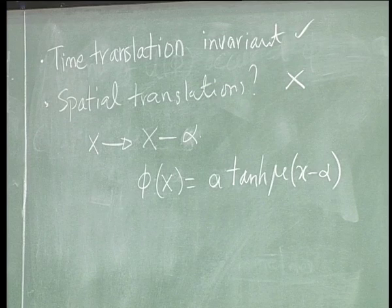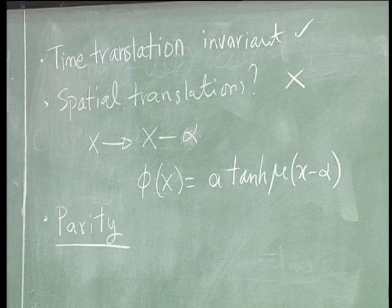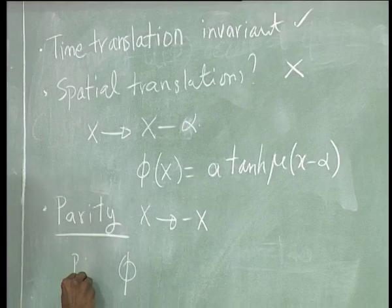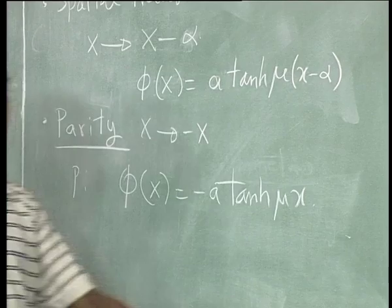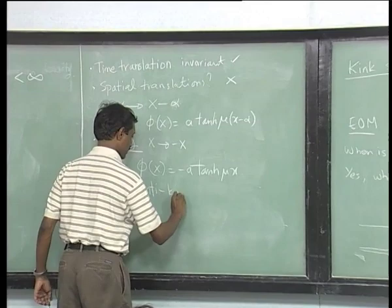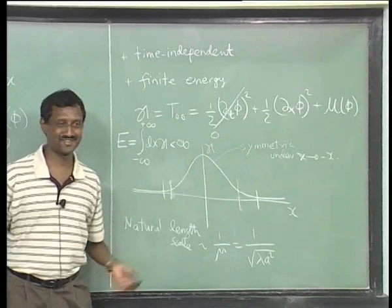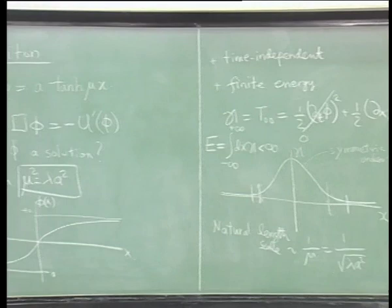This is analogous to moving a table from one place to another. Here is a case where a symmetry of the theory maps one solution to another — and sometimes, of course, it maps a solution to itself. Under parity x → −x, the solution goes to a new one because the asymptotics at plus and minus infinity get exchanged. This is sometimes called the antikink.